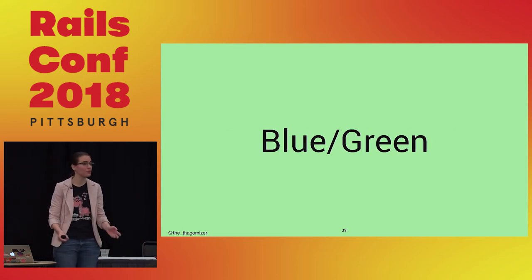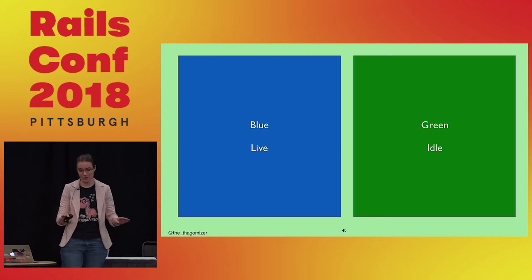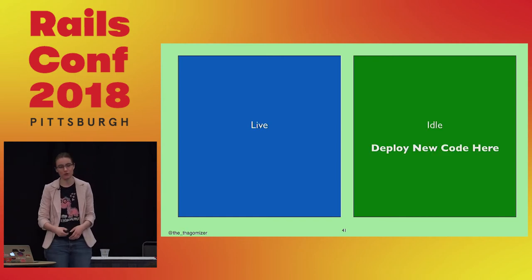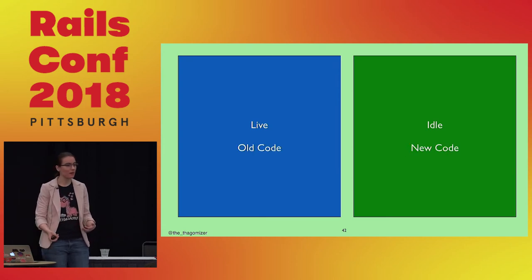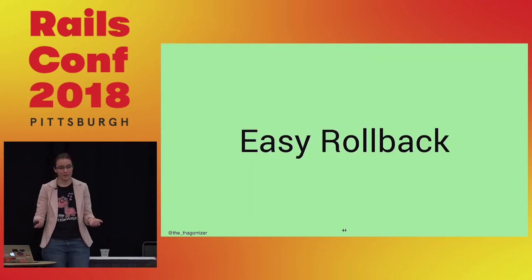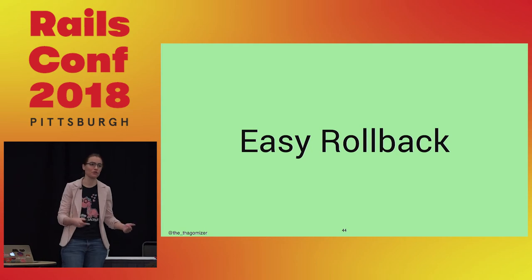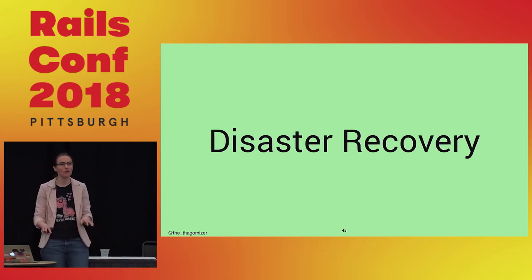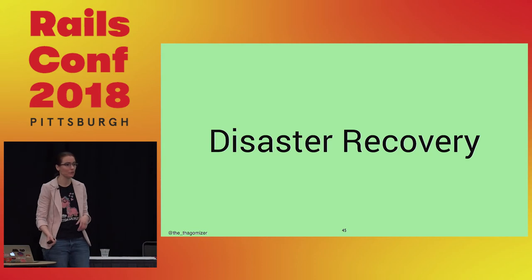The second deployment strategy is blue-green deployments. You have two copies of production — one is blue, one is green. One is always live and one is always idle. When you want to roll out new code, you deploy it to the idle side. Once it's up and running, you start routing traffic to the new code, switching live and idle. If something goes wrong, rollback is easy because you had the previous known good version live just minutes ago. It can also be great for disaster recovery if blue and green are in different parts of the same data center.